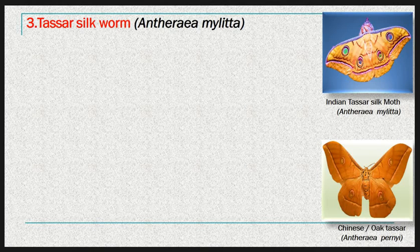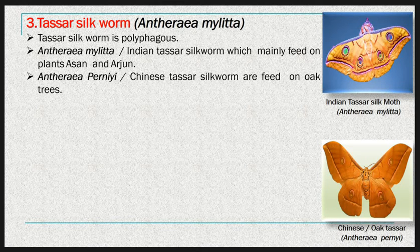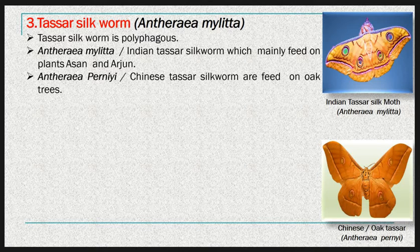The tassar silkworm's biological name is Antheraea mylitta, also called the Indian tassar silkworm. Tassar silkworms belong to the genus Antheraea and are all wild silkworms. The different species are: Antheraea pernyi (Chinese tassar silk moth), Antheraea tapioca, Antheraea yamamai (Japanese tassar silk moth), and Antheraea mylitta (Indian tassar silk moth). Antheraea pernyi feeds on oak trees, while Antheraea mylitta mainly feeds on Asan and Arjuna trees.